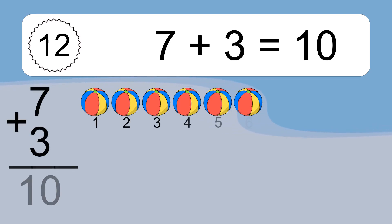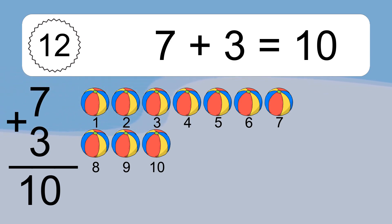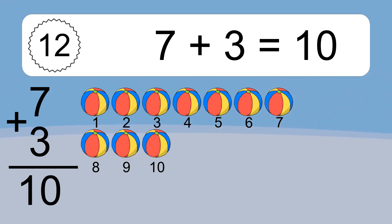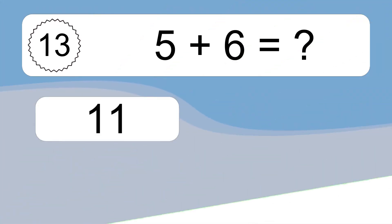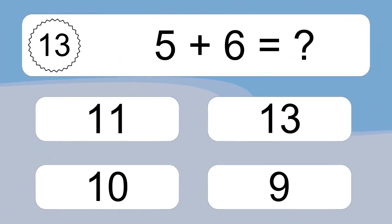Seven plus three equals what? Seven plus three equals ten. Let's count it: one, two, three, four, five, six, seven, eight, nine, ten.